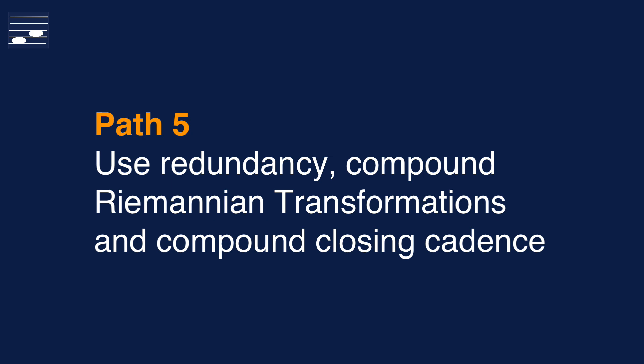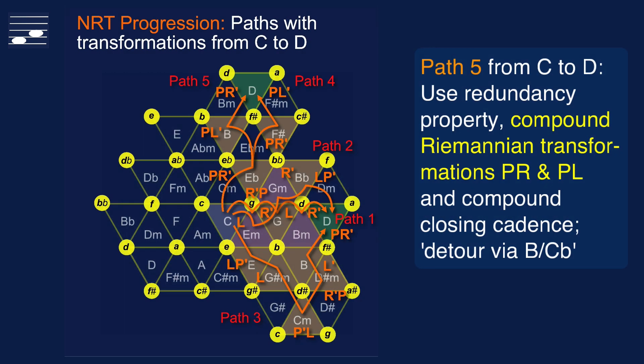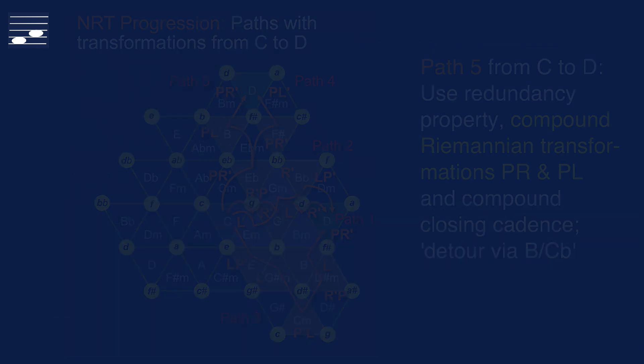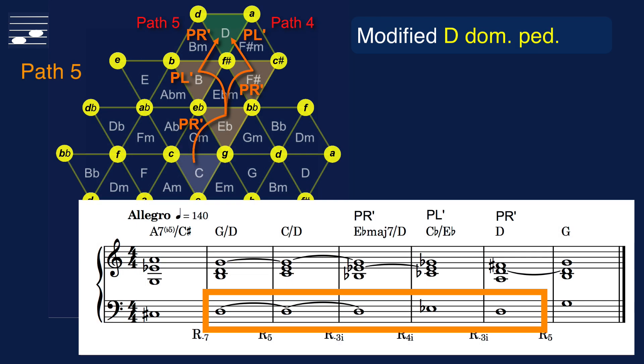The redundancy property is used once again in path 5, but I designed the path in such a way that we obtain a positive compound closing cadence. What we see in the Tornetz diagram is that we turn left just before reaching the destination chord D. Still we use compound Riemannian transformations only, but this time the target approach is through the B major triad.